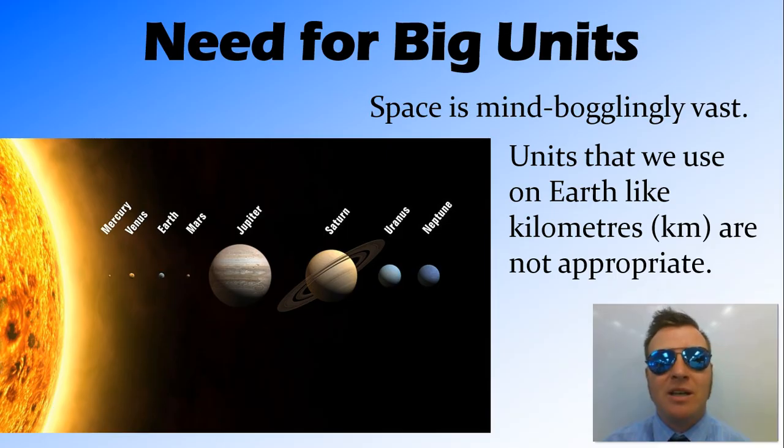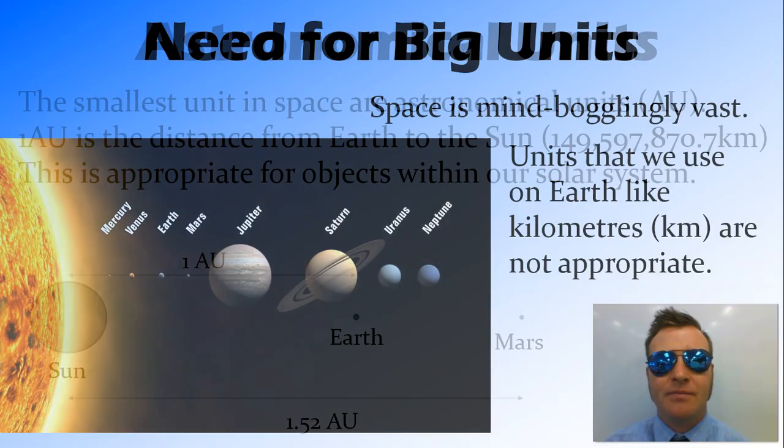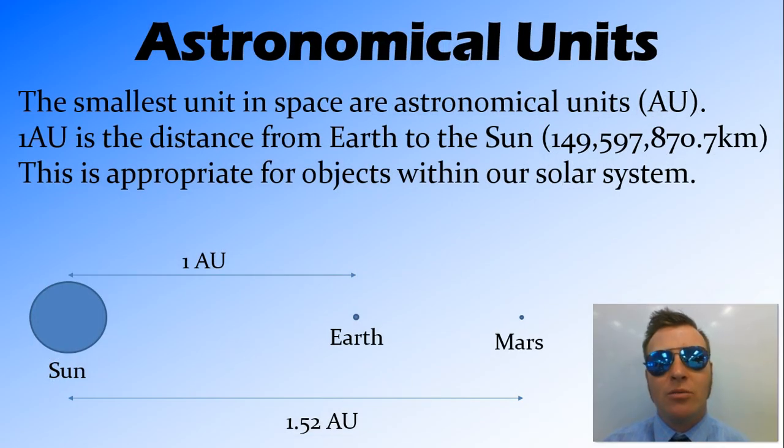But this means that we can't just use kilometres. We need bigger units. Now, the first unit we'll look at, and the smallest one, are called astronomical units.